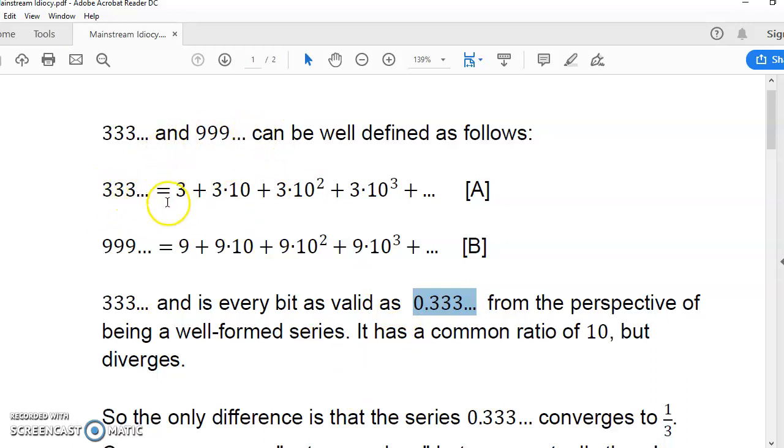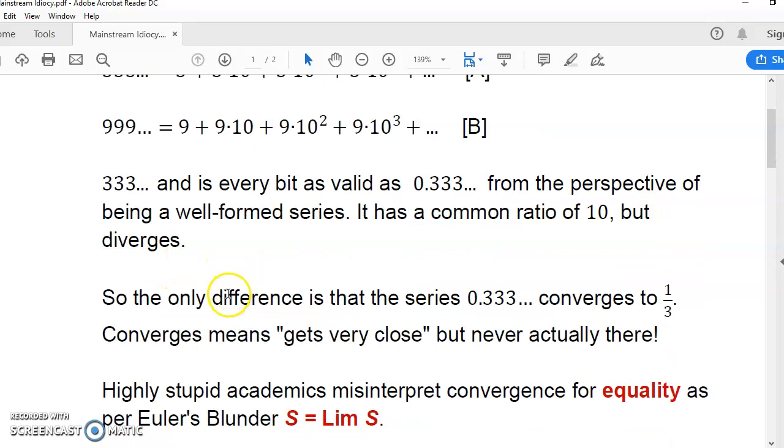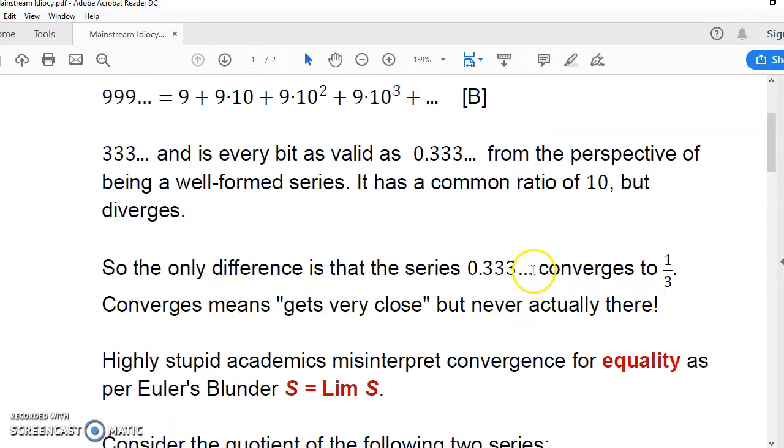So, 333... and 999... both diverge. Usually, one talks about the limit of this series, and it's actually a third.